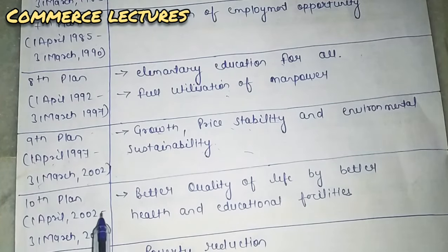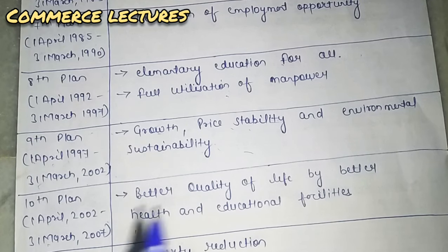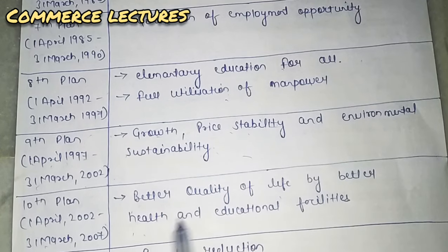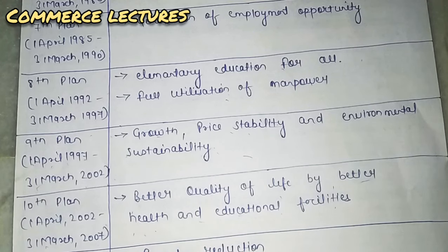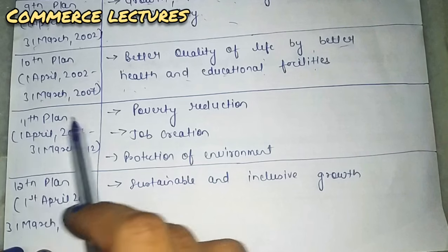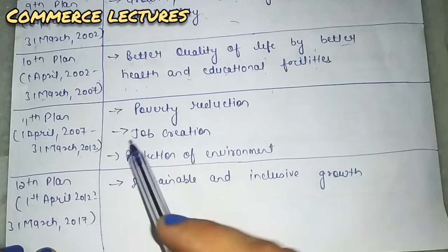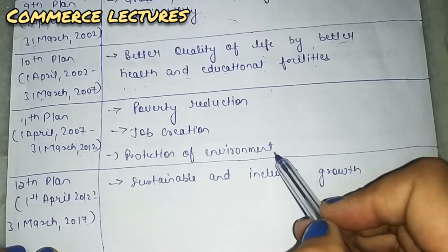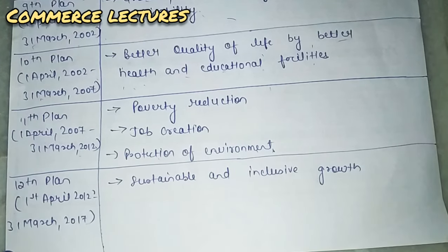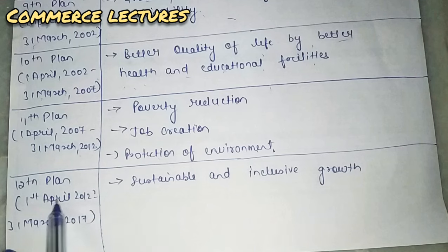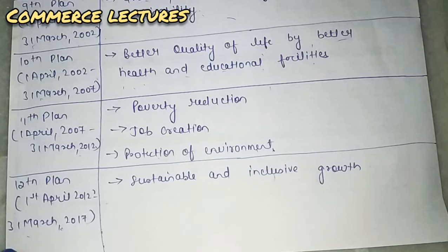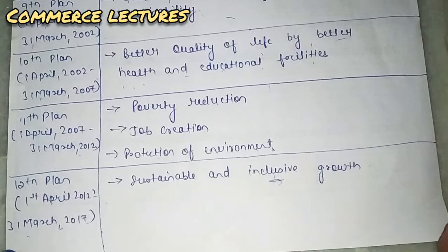The tenth plan ran from 1st April 2002 to 31st March 2007, with the aim of better quality of life through better health and education facilities. The eleventh plan ran from 2007 to 2012, focusing on poverty reduction, job creation, and protection of the environment. The twelfth plan ran from 2012 to 2017, focusing on sustainable and inclusive growth — growth that does not affect future generations and whose benefits reach everyone.